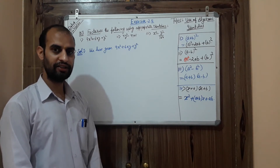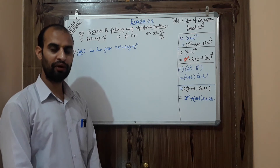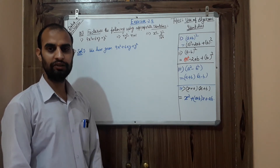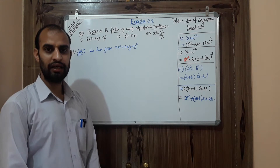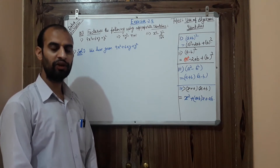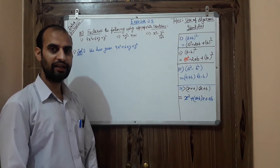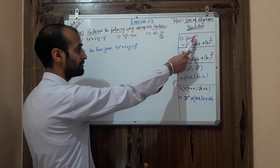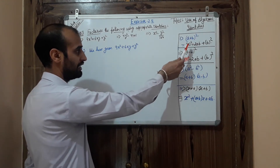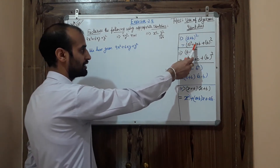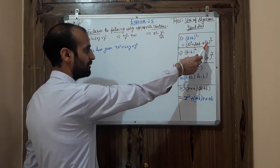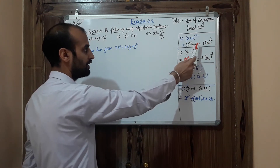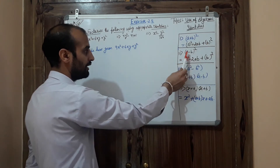Today I am going to tell you about how to factorize any polynomial by using algebraic identities. So first, have a look at the algebraic identities. The first identity is: (a + b)² = a² + 2ab + b². You can also write b² at the start and 2ab at the end.